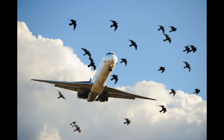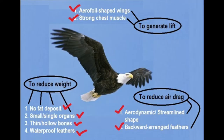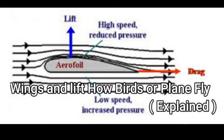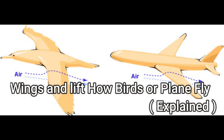For a plane or bird to fly, its wings must produce enough lift to equal its weight. Most wings used in flight are a special shape called aerofoils. This shape is needed to help generate lift. Let's see about wings and lift — how birds or planes fly.